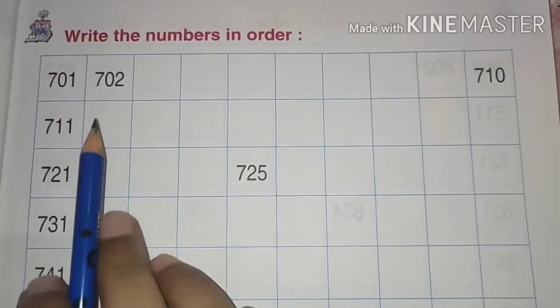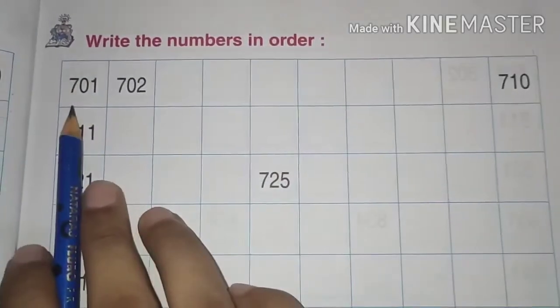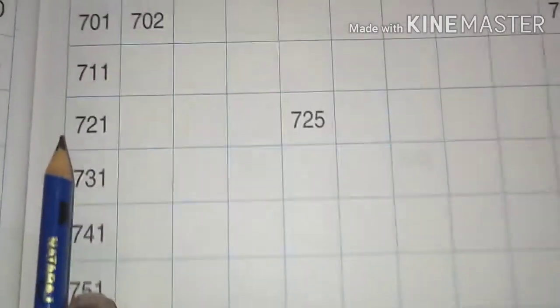Hello students, now this is your next exercise that is write the numbers in order and these are the numbers from 701 to 800. Okay, so let's start.